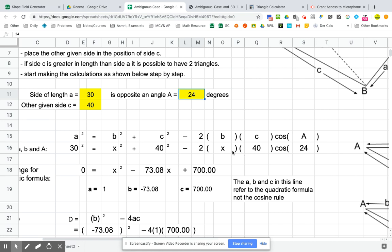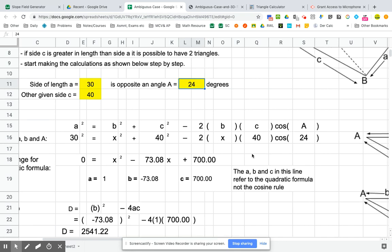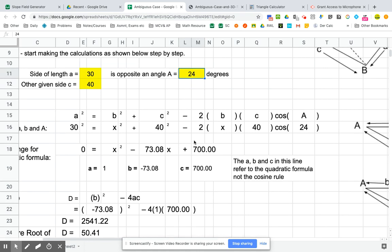Now, if you notice here, it says minus two times X times 40 times cos of 24. So in order for me to calculate that, I need to do negative two multiplied by 40 multiplied by cos of 24. And that becomes my coefficient in front of X. And then the other thing that you're going to need to do is you want to get the left side to equal zero. So you're going to have to subtract 30 squared from both sides. So you're going to end up going 40 squared, subtract 30 squared.